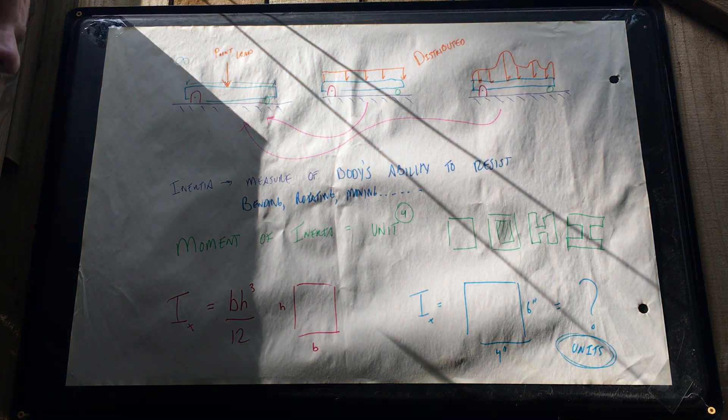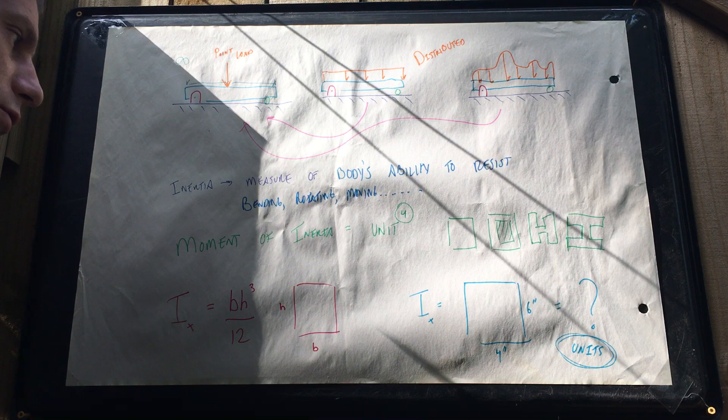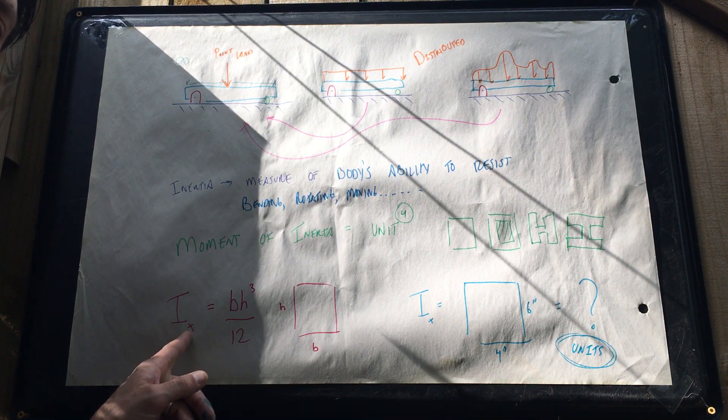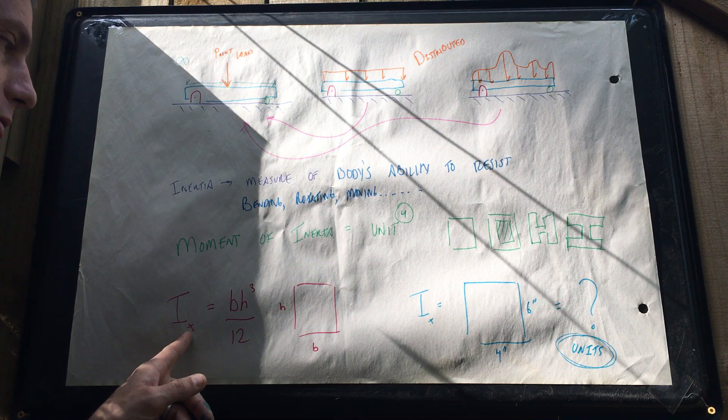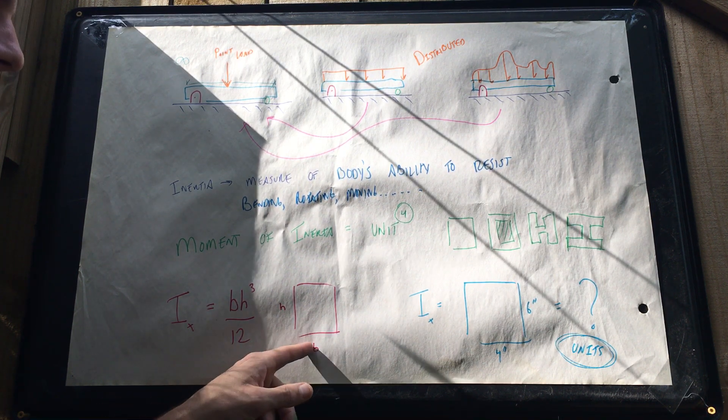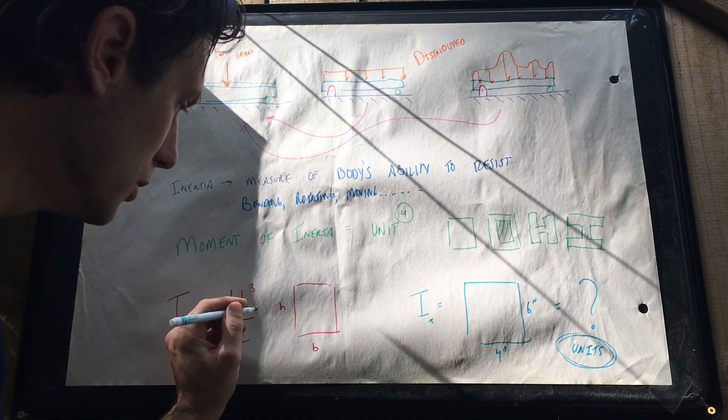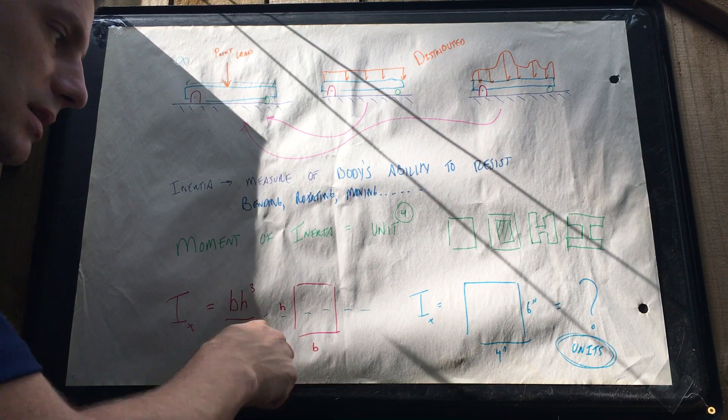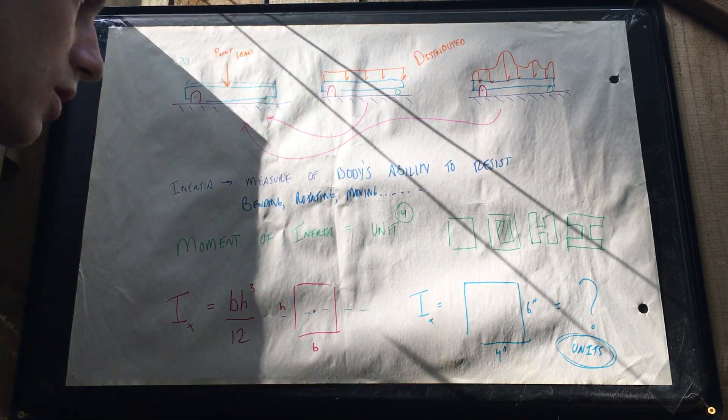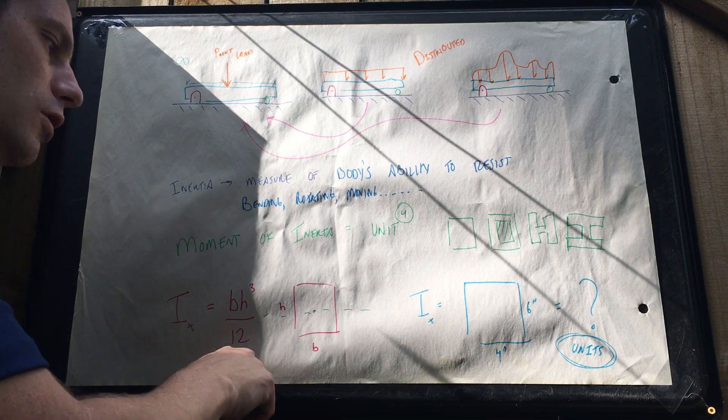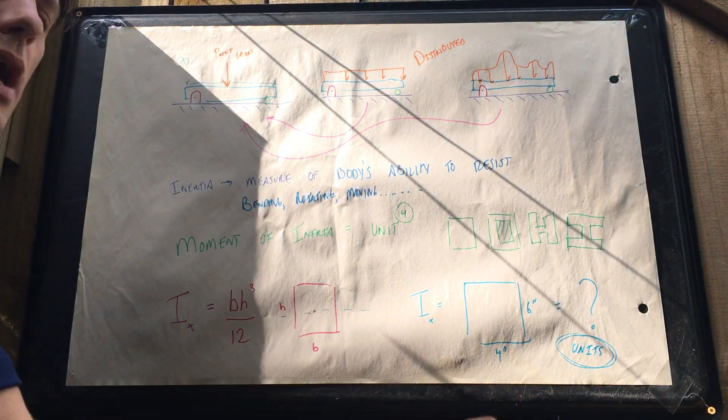So inertia is pretty straightforward in terms of calculating it. We're doing around the x-axis. That's why we have I of X here. That's our bending axis to go back to that. bh cubed over 12. Here are your variables. The most important thing is that the bending axis is symmetrical to your object. So bh cubed over 12. This is your object. So as an example, I want you to try calculate that of a box.